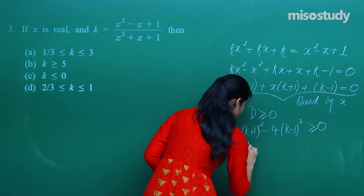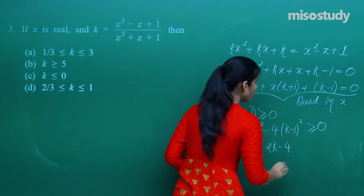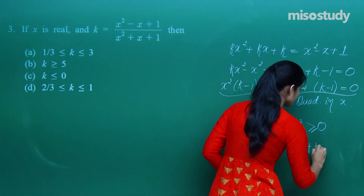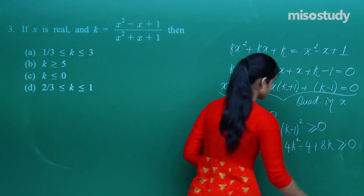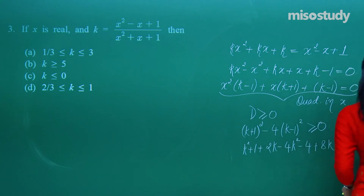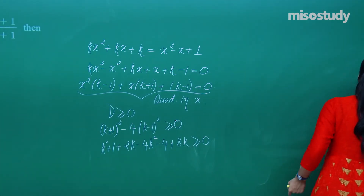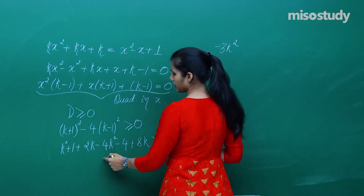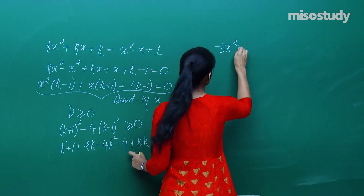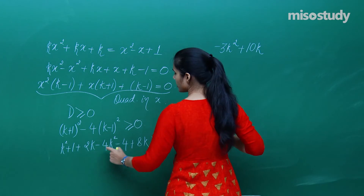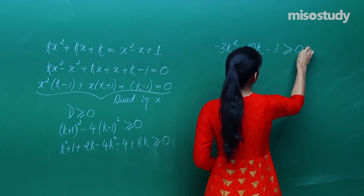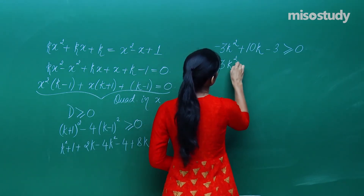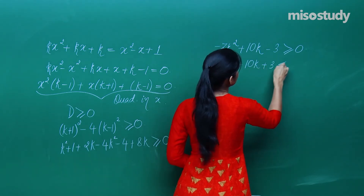Expanding: k² + 1 + 2k - 4(k-1)² ≥ 0. This becomes k² + 2k + 1 - 4k² + 8k - 4 ≥ 0, giving -3k² + 10k - 3 ≥ 0. Multiplying through by -1 and flipping the inequality: 3k² - 10k + 3 ≤ 0.